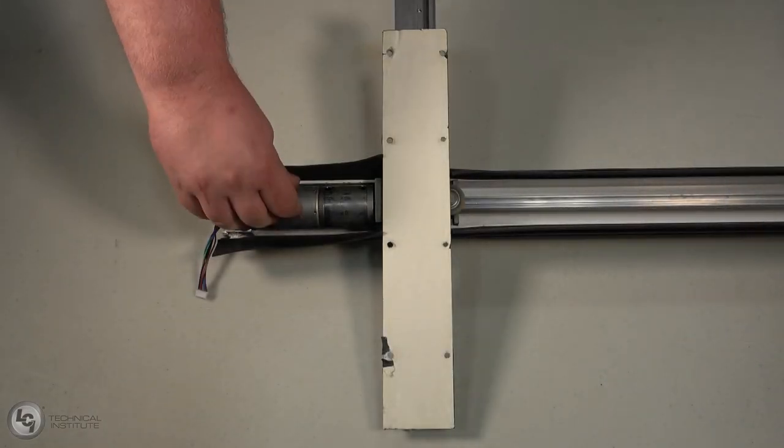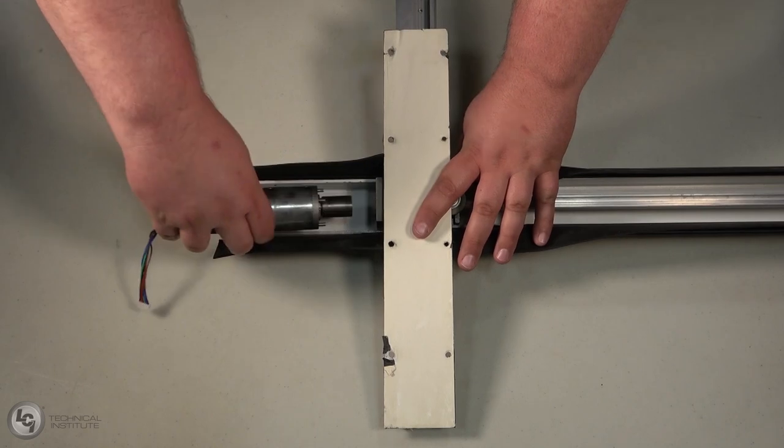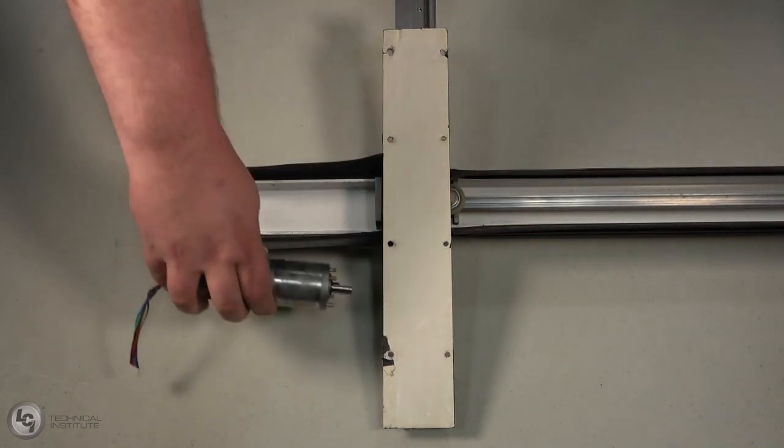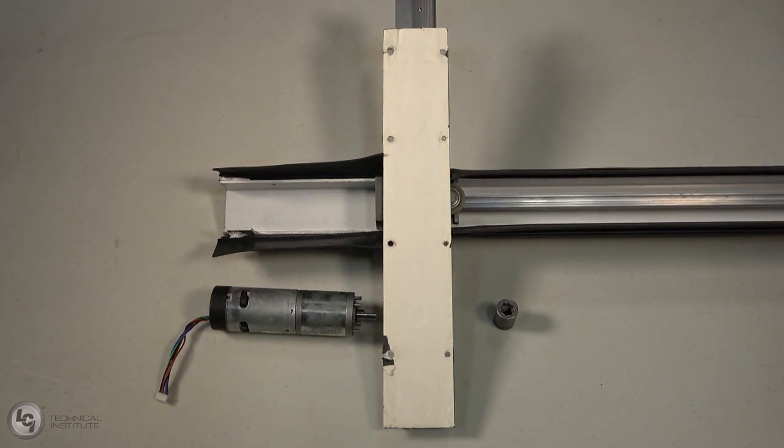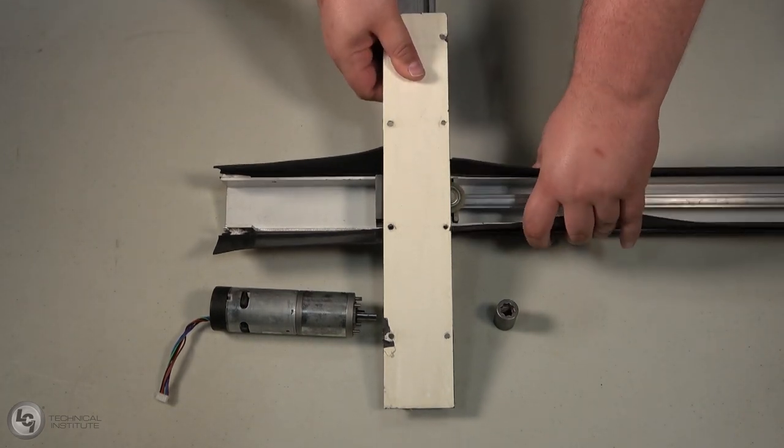Now that the motor is free, slide the motor up and out of the column. The coupler will likely come out with it. With the motor and coupler pulled free, you can now slide the gear racks out and inspect them.